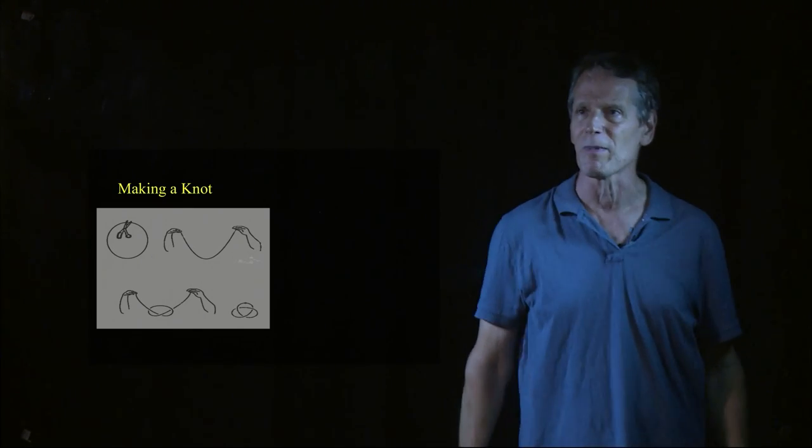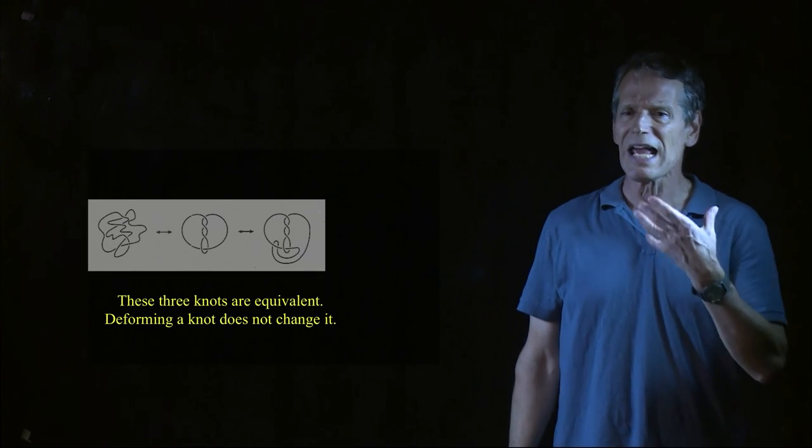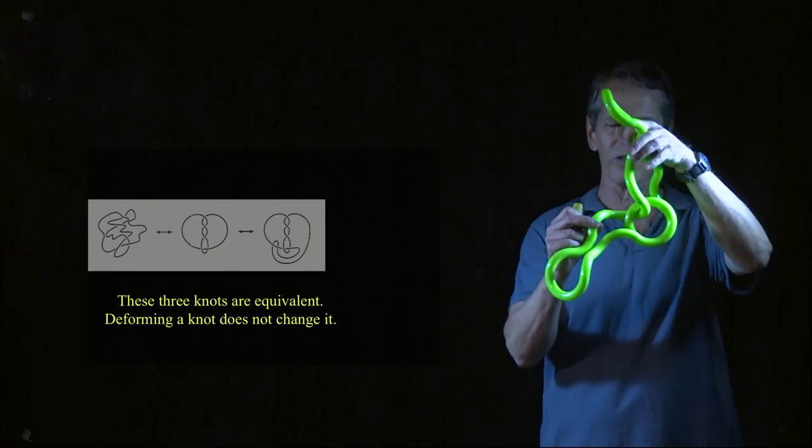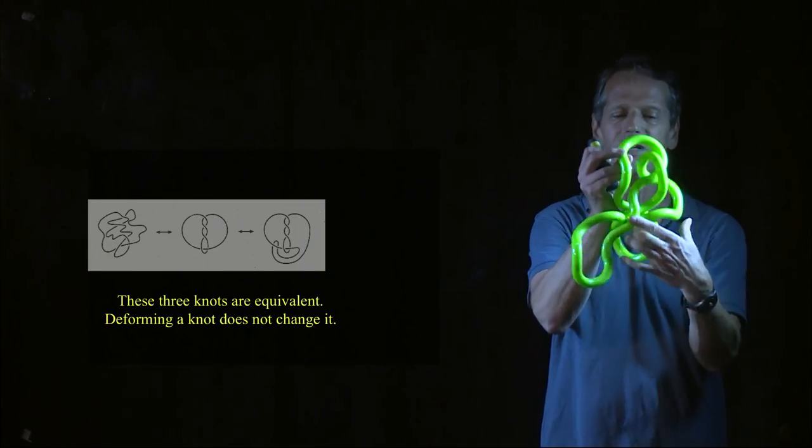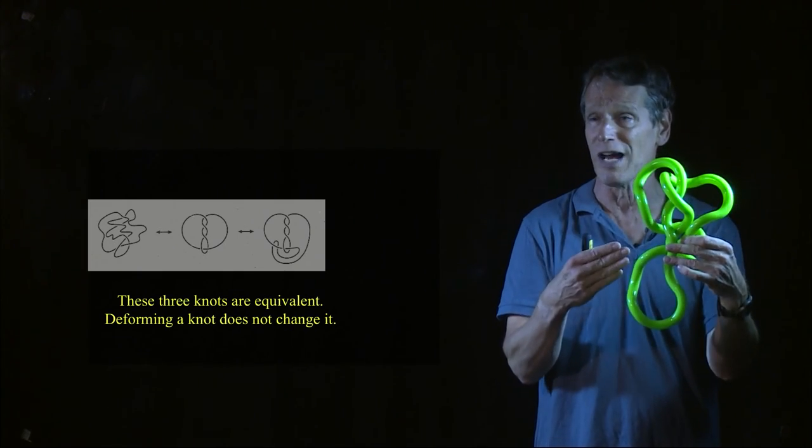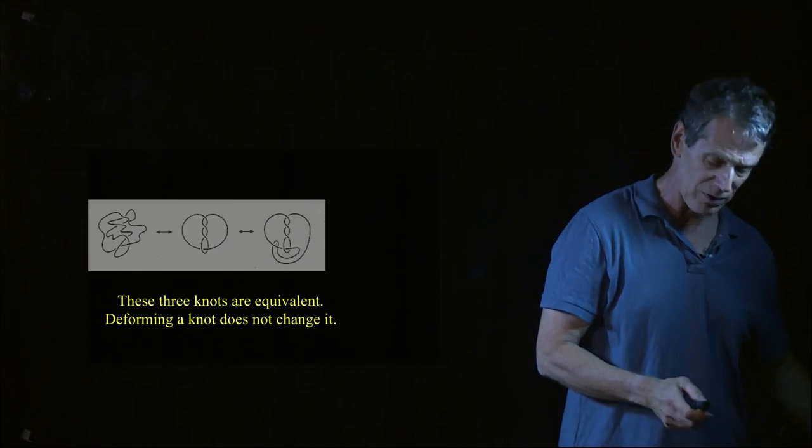Now, once I have a mathematical knot, I can have different versions of it, so I can make it look different. You can see a picture of it that looks like this, or I can twist like this, I can twist like this, and you see different pictures of it. But we consider those all the same knot. So we're allowed to have different pictures of the same knot.